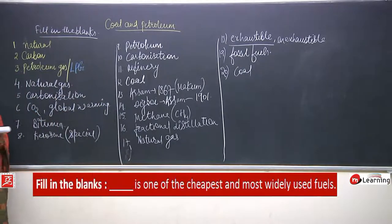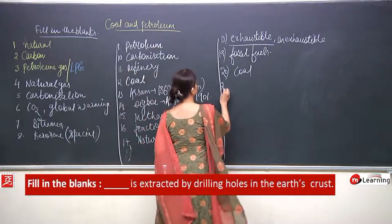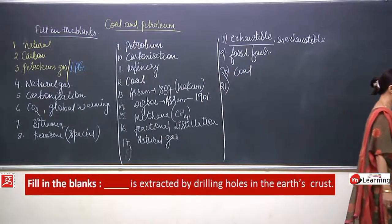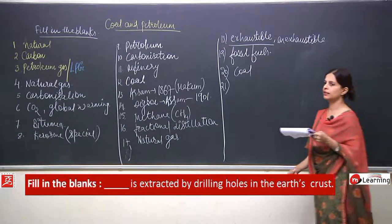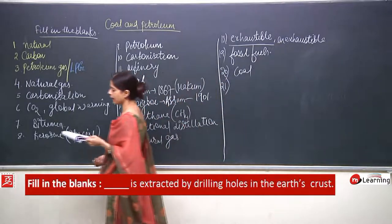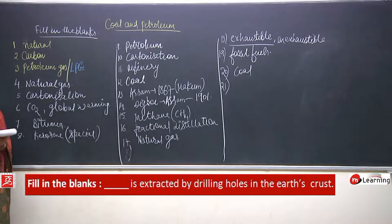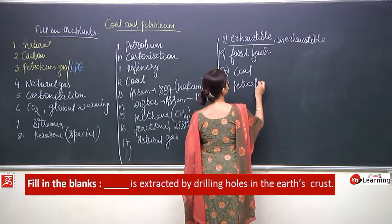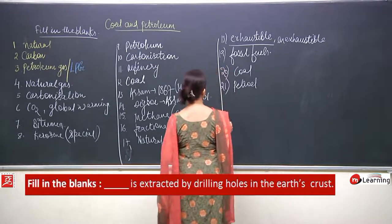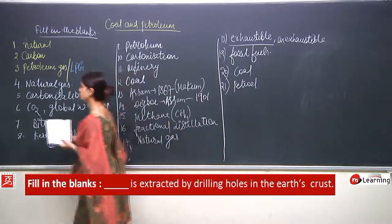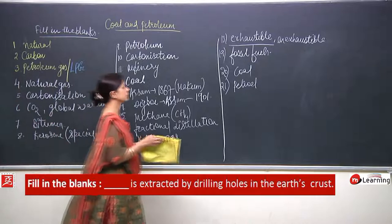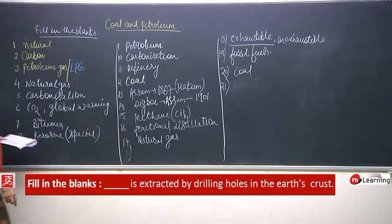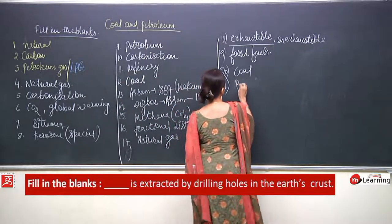Number 21: petroleum is extracted by drilling holes in the earth's crust. When the earth's crust is drilled, what we get from inside after digging is petroleum.